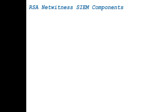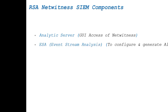In RSA NetWitness SIEM solution there are different components. First is the Analytic Server, which is the heart of the solution. It is the GUI access point and is used to perform maximum activities: report creation, report generation, dashboards, alerts, device integration, and log fetching. The second component is ESA — Event Stream Analysis. This component is used to configure and generate alerts. For example, you can configure an alert so that if somebody tries to access your firewall from China, an alert is generated and forwarded to the firewall administrator via email notification.